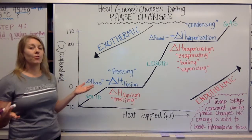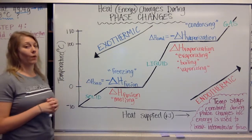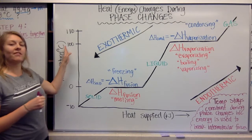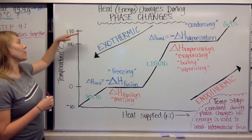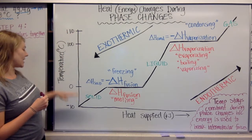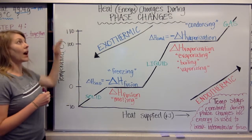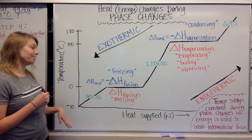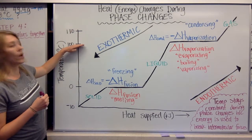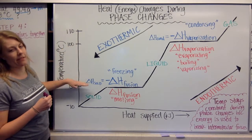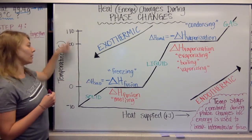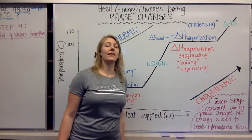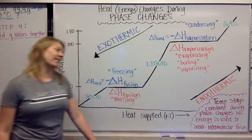We have a basic graph drawn right here and I want you to draw what we have. On the y-axis we have temperature in degrees Celsius, going from negative 10 to 110 degrees Celsius. Zero and 100 are stops along the way here, so label all of those.